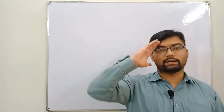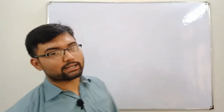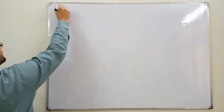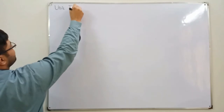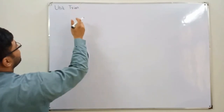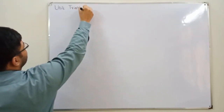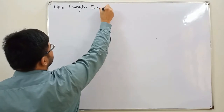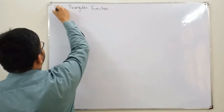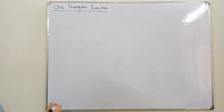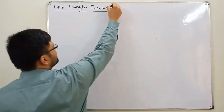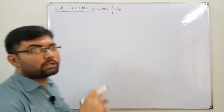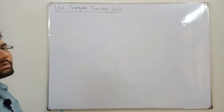Bismillah ar-Rahman ar-Rahim, Assalamu alaikum. Salah Khan here with another basic signal — the unit triangular signal, also called the unit triangular function. As the name suggests, it is a triangular pulse, similar to how in the previous video we had a rectangular pulse shaped like a rectangle. This one is shaped like a triangle.